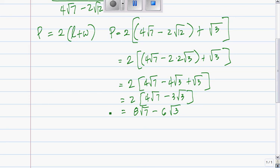Now that's perimeter. Area is what? Area is simply length times width.